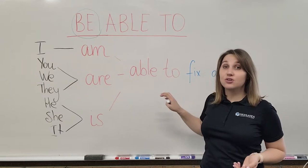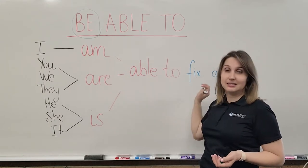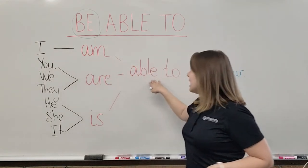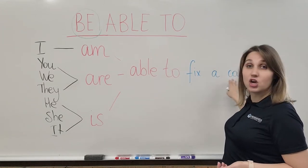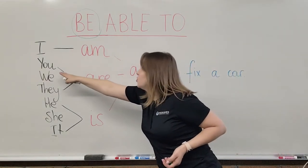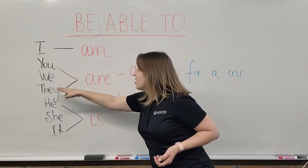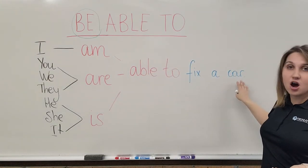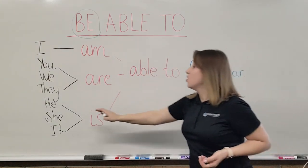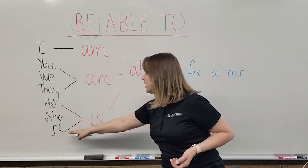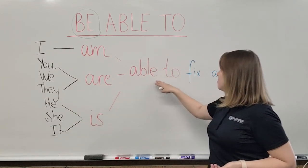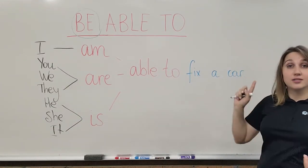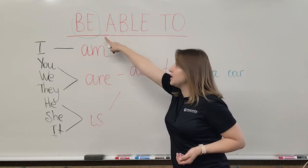Let's look at the whole sentence. 'I am able to fix a car.' 'You, we, or they are able to fix a car.' 'He, she, or it is able to fix a car.' So remember, the word 'to be' changes to 'am,' 'are,' or 'is,' and all the rest stays the same.